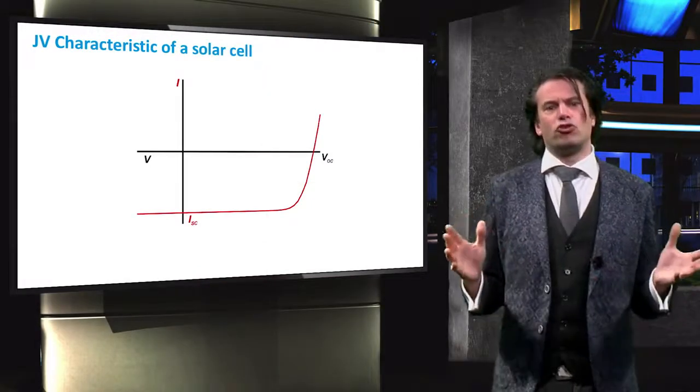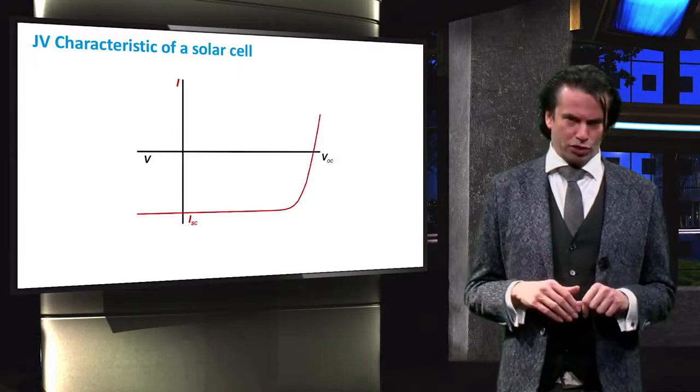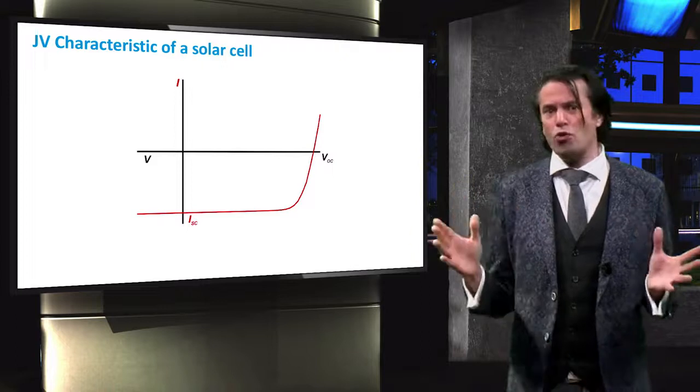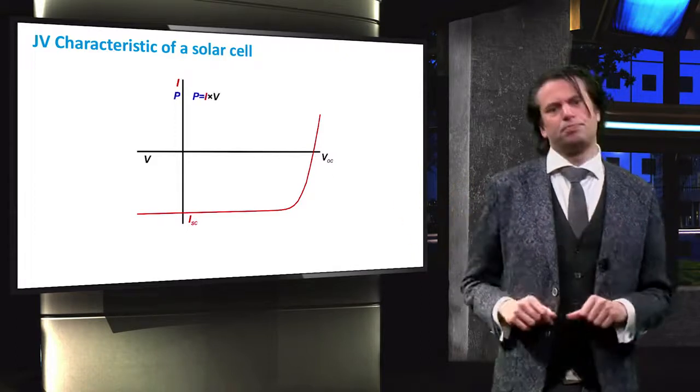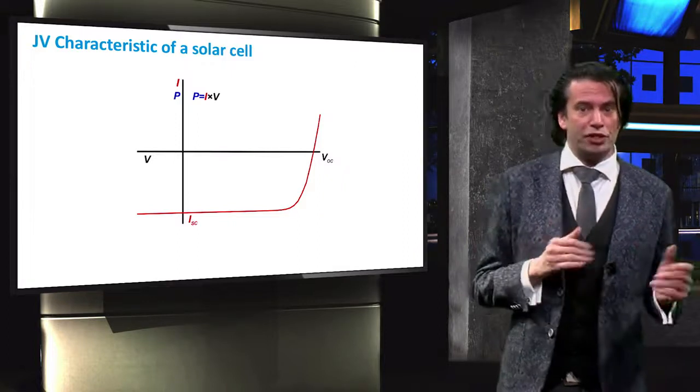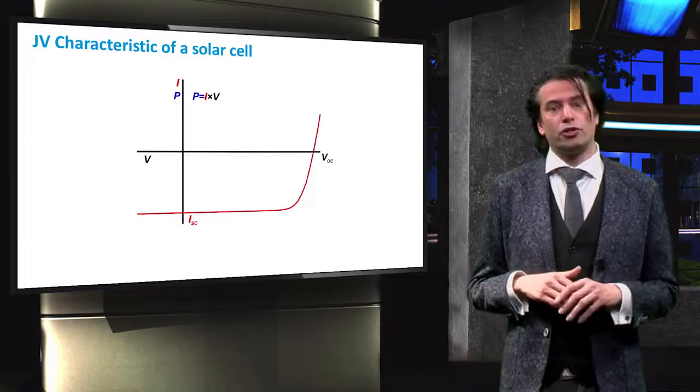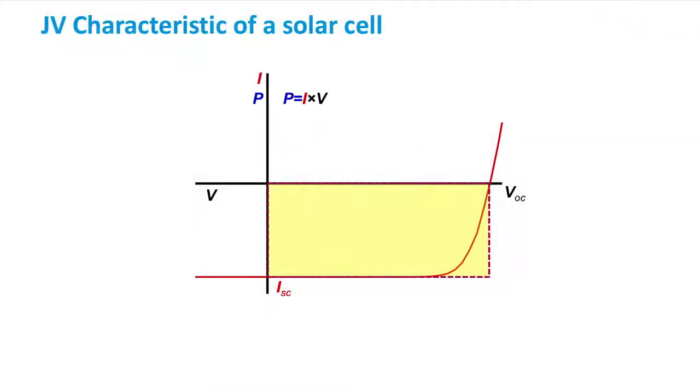Let's look at this curve a little further and consider the power output of a solar cell. You should know that the power is equal to the product of the current and voltage. We will represent the product of the open-circuit voltage and the short-circuit current with a yellow box. This power is greater than the maximum power that a solar cell can produce. However, it will be useful to calculate the solar cell's efficiency.